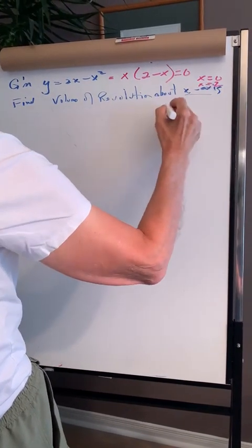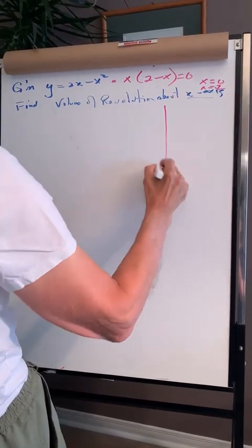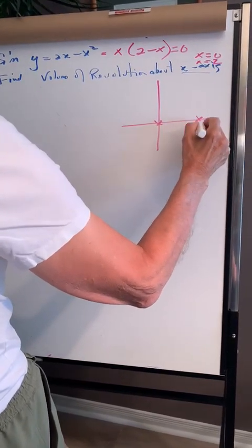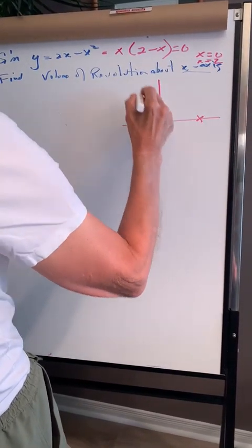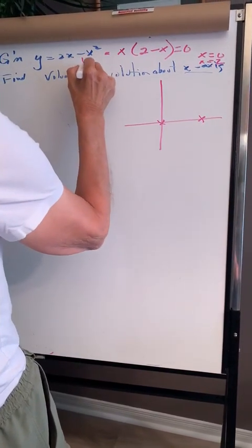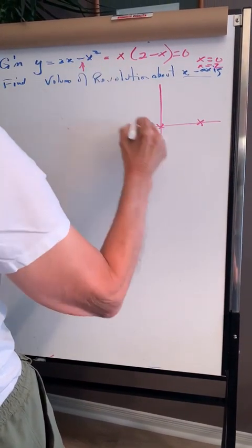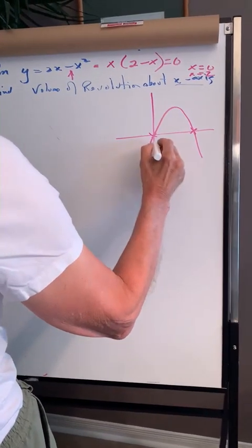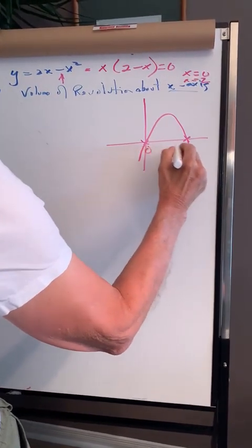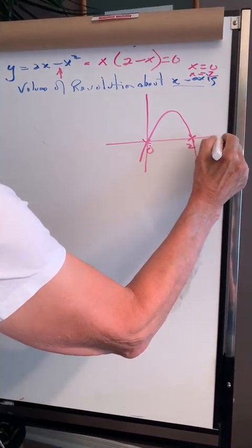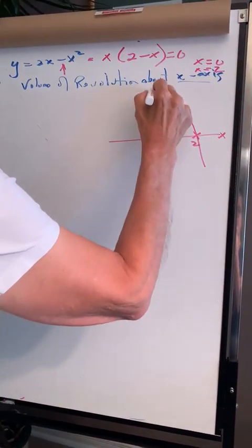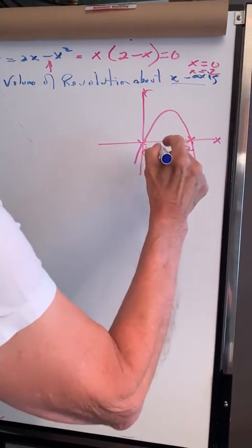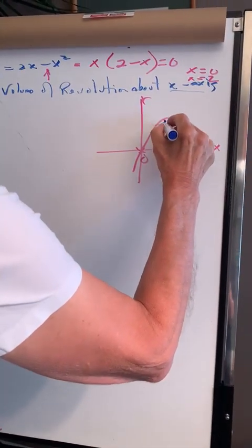So let's sketch that first of all — 0 and 2. And because this is a negative, the parabola is concave down, with roots at 0 and 2. And we're going to rotate this around the x-axis.